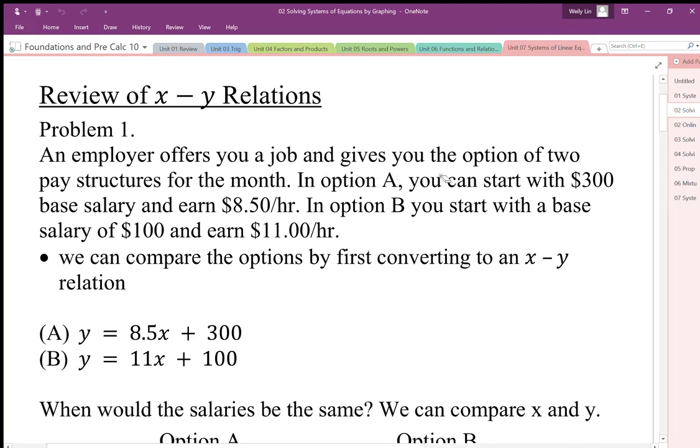So in option A, you start with $300 base salary and earn $8.50 per hour. That's option A. So that looks like this when we write out the option as a calculation relationship. Option B, we start with a base salary of $100 and we earn $11 an hour. So this one starts with less but earning more per hour. The rate is higher.